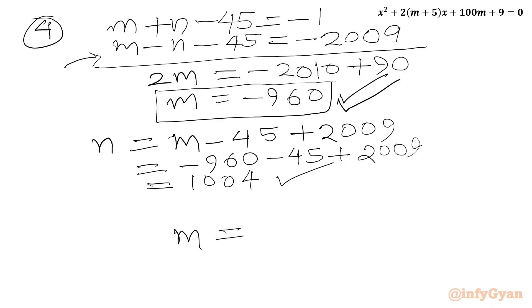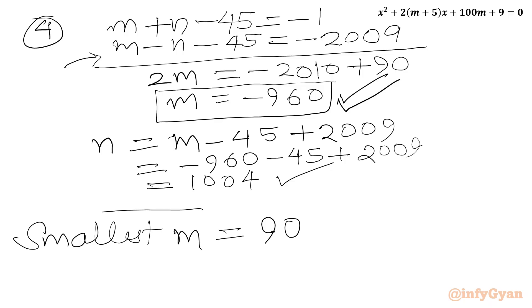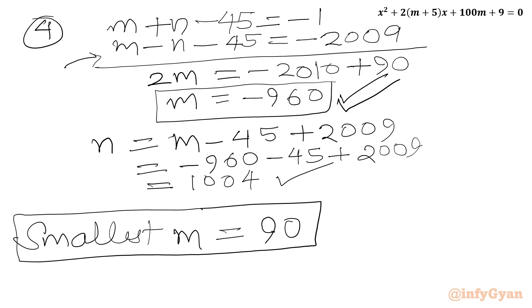So the smallest positive integer m, out of the four cases (1050, 90, 0 rejected, -960 rejected), is m = 90. That is our final answer. I hope friends you liked this video. Thank you so very much for watching. Don't forget to like, share, and subscribe. Bye bye, good luck, take care!